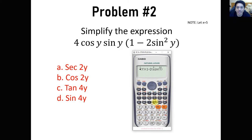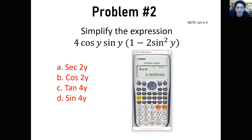Be careful inputting sine squared of y — input it as 1 minus 2 times (sine y) squared, then close the quantity. Call y equals 5, get a value, and store it to A for comparison with the multiple choice. Note that secant of 2y is basically 1 all over cosine of y.